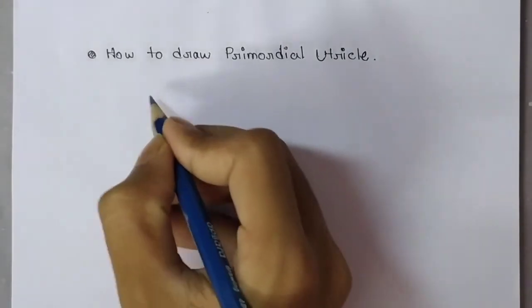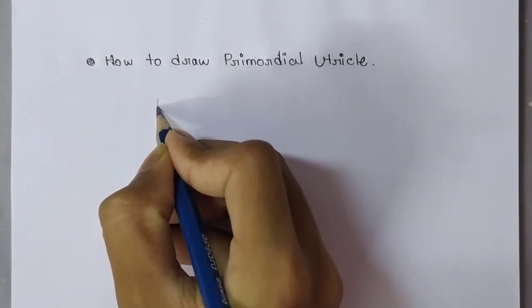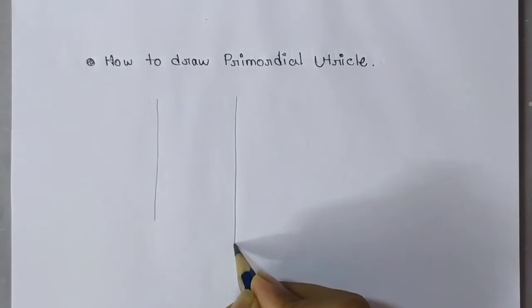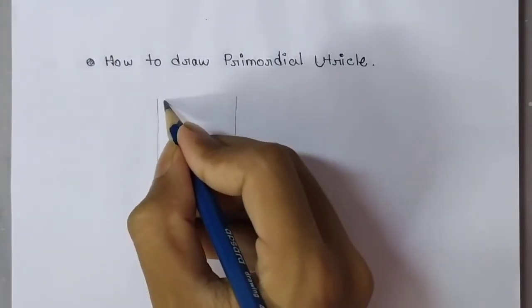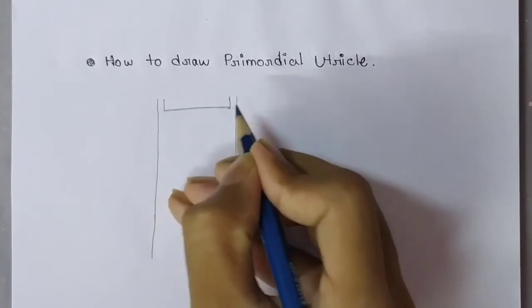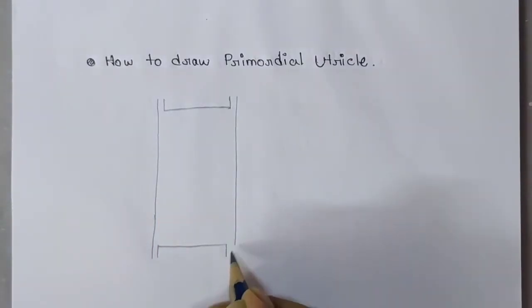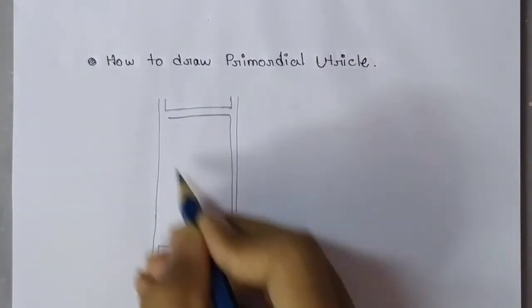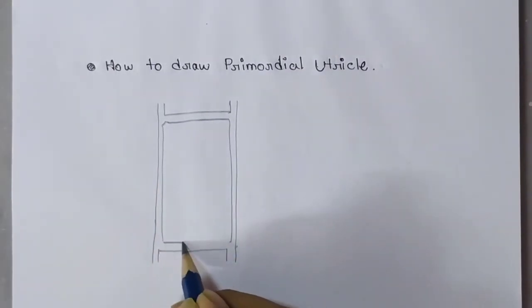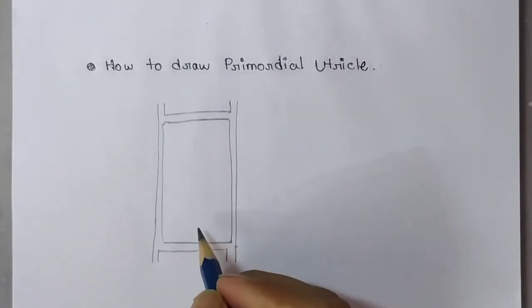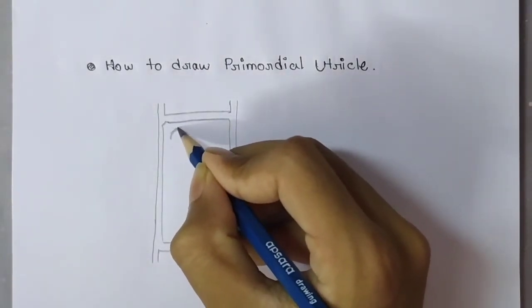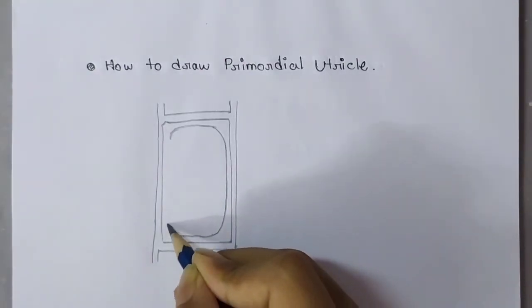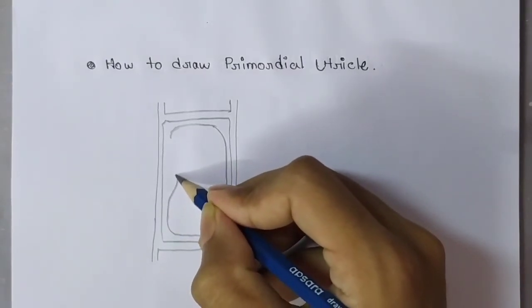Now let's see how to draw primordial utricle. First, make a line like this and a parallel line in this way. Then make something like this on the upper side and the same at the bottom side. Inside this, make a box. Now draw the cytoplasm in this way, and always try to make a notch like this.